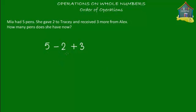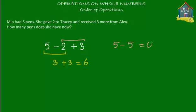How do you solve this number statement? Do you do five minus two first or do you do two plus three first? Let's try doing five minus two first: five minus two is three, and then three plus three is six — she has six pens. Now let's try doing two plus three first: two plus three is five, and five minus five is zero — that says Mia has no pens left. One says six pens, the other says zero. How do we know which is correct?